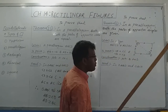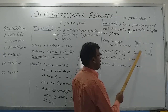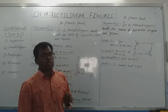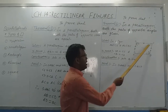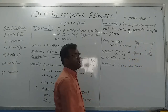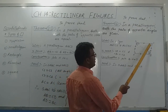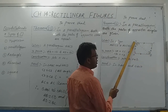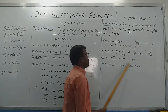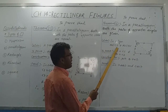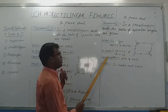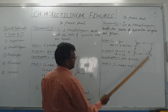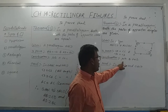If ABCD is a parallelogram, we have to prove that opposite angles are equal — that is, angle A equals angle C and angle B equals angle D. AB is parallel to CD and AD is parallel to BC. Construction: join diagonal BD. Given: AB parallel to CD and AD parallel to BC. To prove: angle A equals angle C and angle B equals angle D.